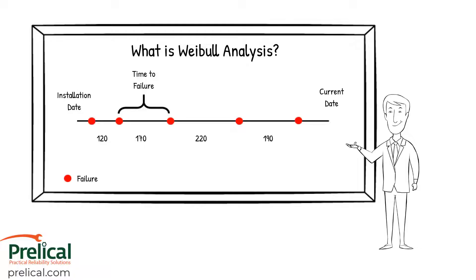So in this case we have 20 days, 170 days, 220 days, and 190 days — those are our time to failures. The next thing we're going to do is create a distribution analysis, or Weibull distribution, to be able to determine what is the frequency of failure and what is the pattern of failure.